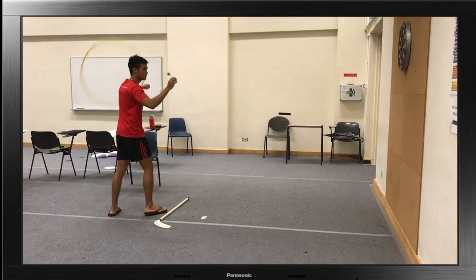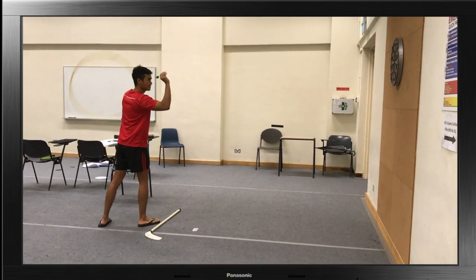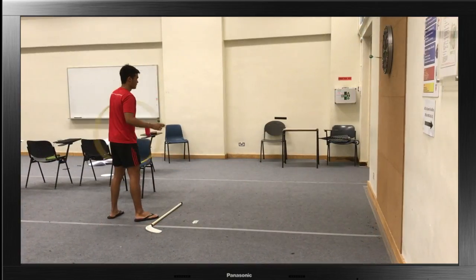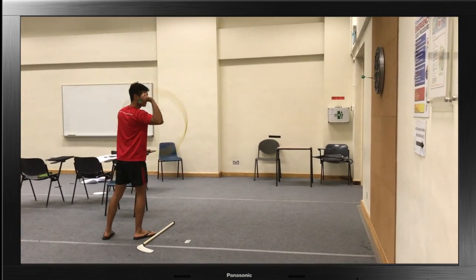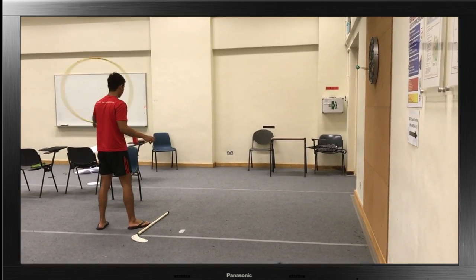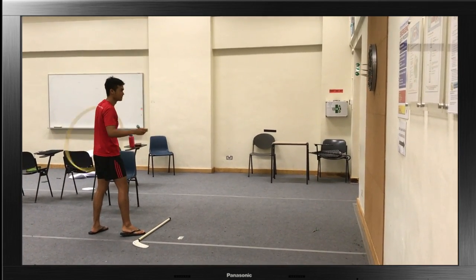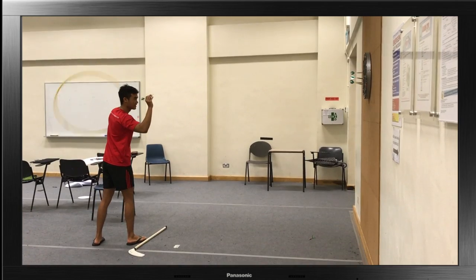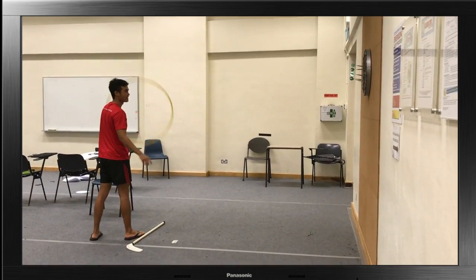The non-dominant hand spins the hula hoop while attempting to shoot the dart with the dominant hand. This is contextual interference because two skills are carried out concurrently. As a result, the brain cannot consolidate or update the motor plan because of the amount of interference, causing the brain to undergo a problem-solving process which potentially leads to an improvement in the learner's dart throwing skill.